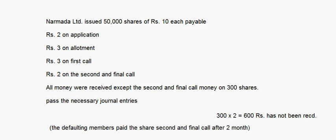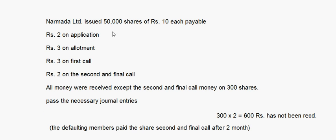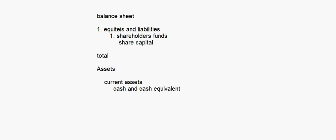There are calls in arrears. We should have received 50,000 into 10 equals 5 lakh rupees, but 600 is not received. So we have actually received 4,99,400 rupees. In the shareholders' funds, you will show only 4,99,400, and current assets — cash and cash equivalents — will also be 4,99,400. Let's look at the notes to accounts.